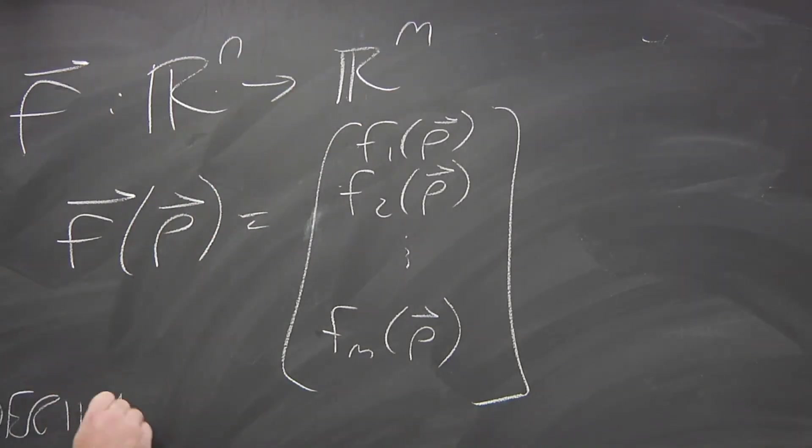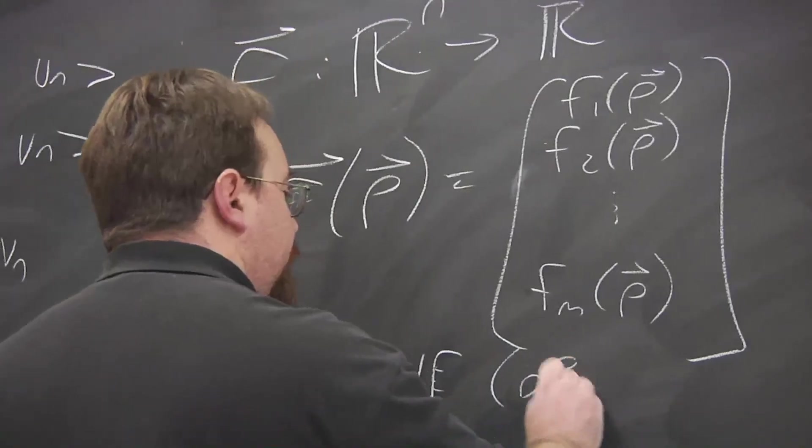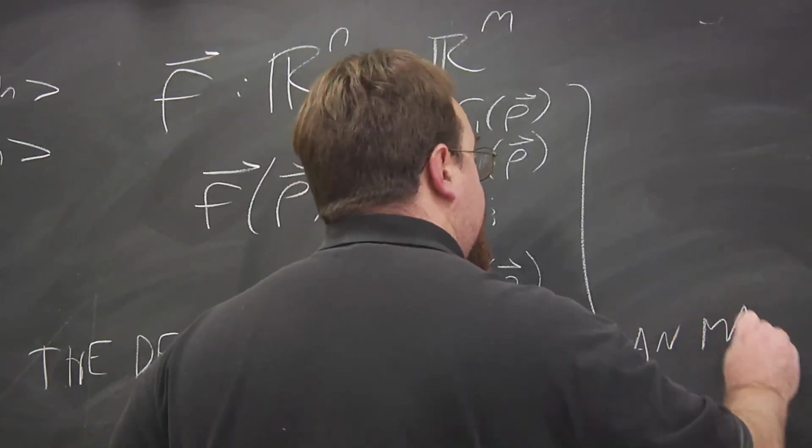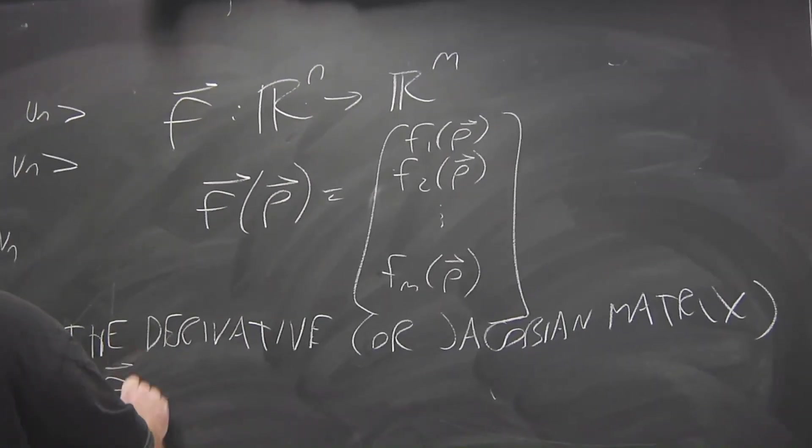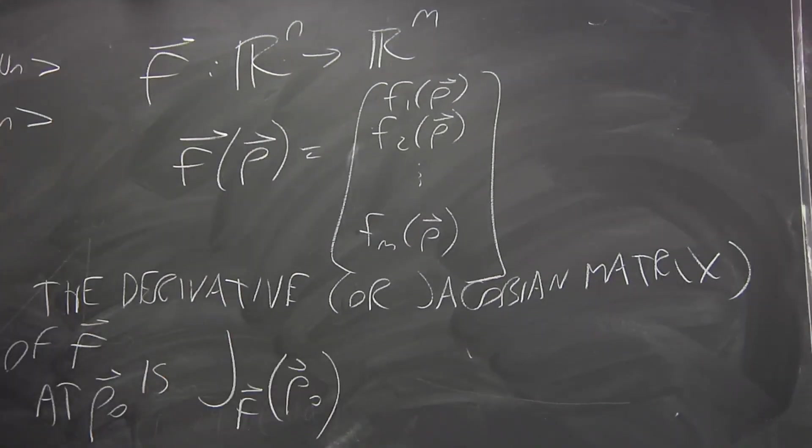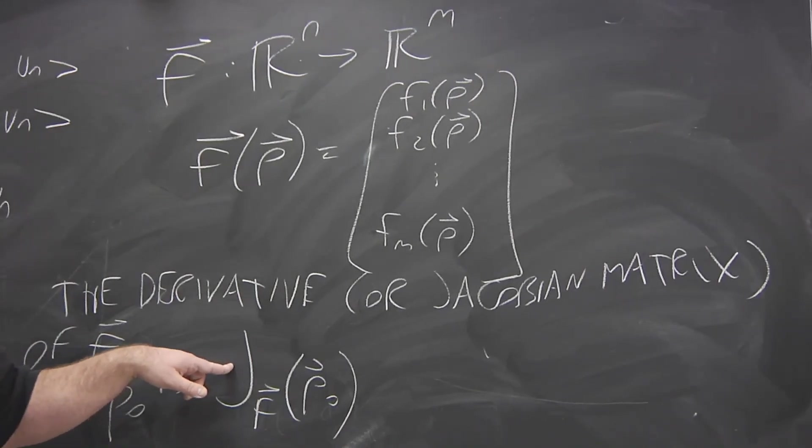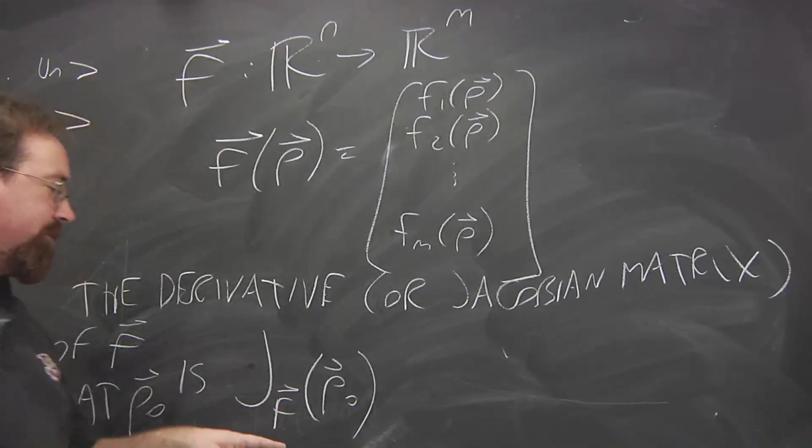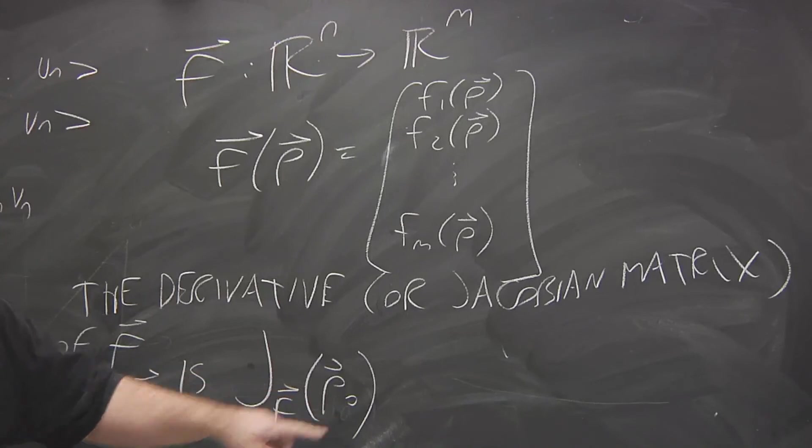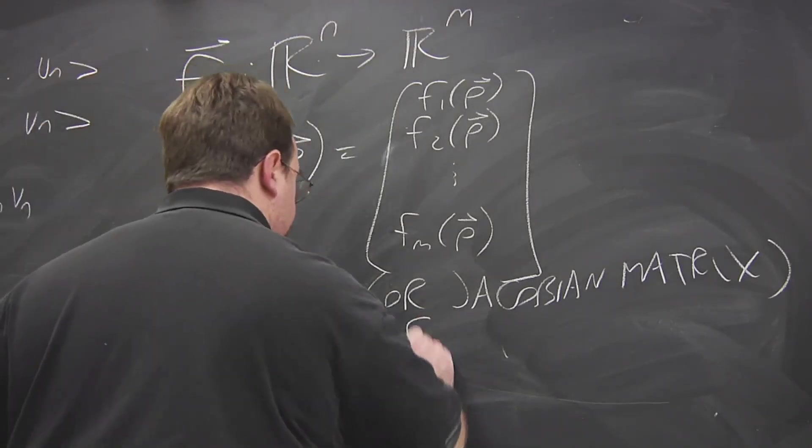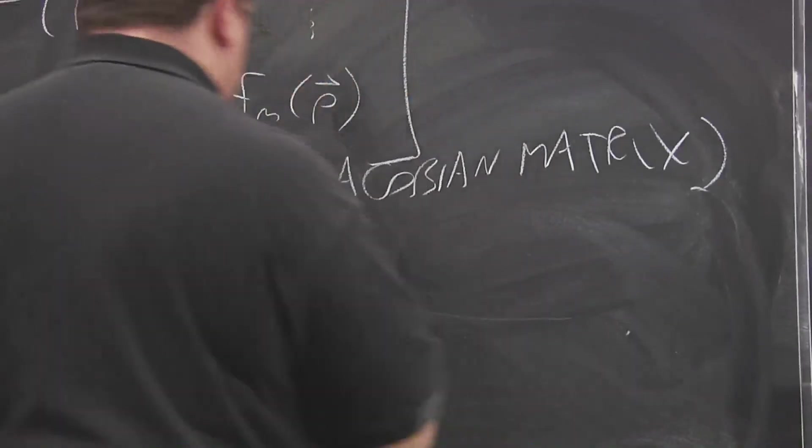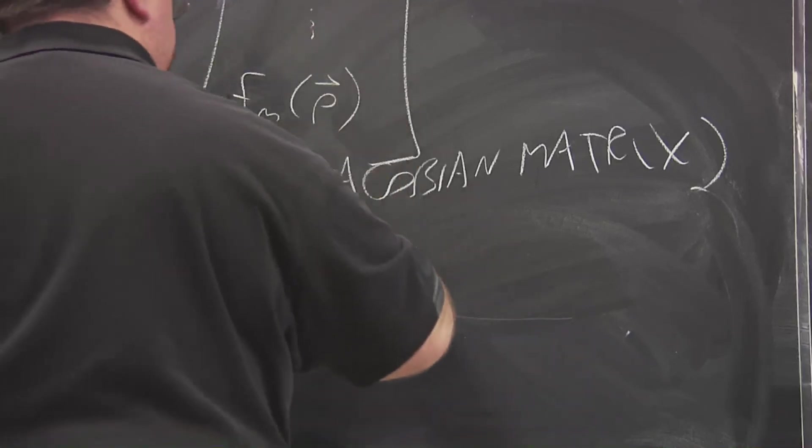So what we call the derivative, this is a term that is used in Marsden actually, or a term that's more commonly used, the Jacobian matrix of a vector valued function at a given point is the matrix commonly denoted using an uppercase J and there's an indication of what function it's for and what point it's being evaluated at. And what we have here is a matrix where each row is going to be the gradient of one of these component functions.